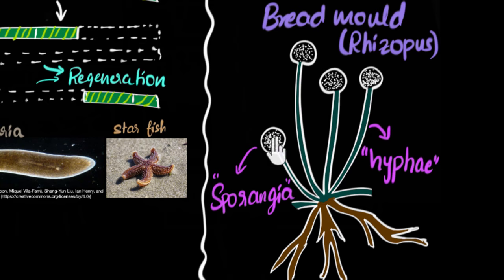And sporangia, as you can see, these dotted things contain, these dotted things are called spores. Spores are kind of like seeds, that they have the ability to grow into new rhizopus, new bread mold. But they're not seeds, we call them as spores.